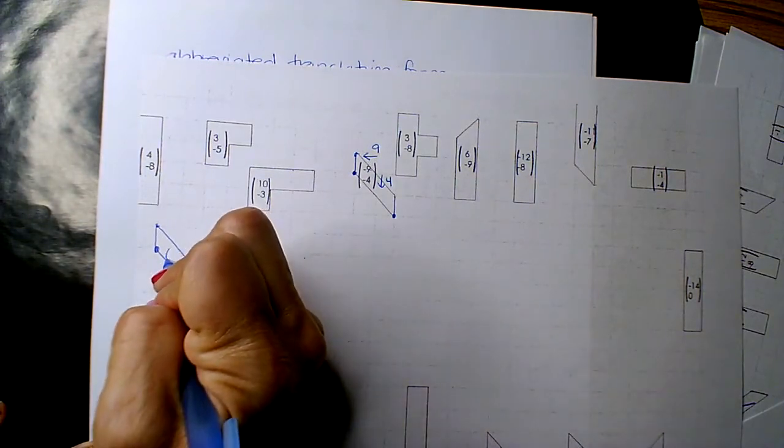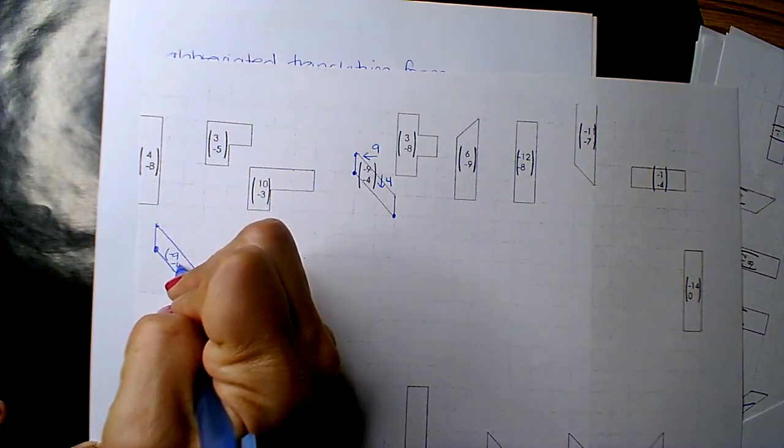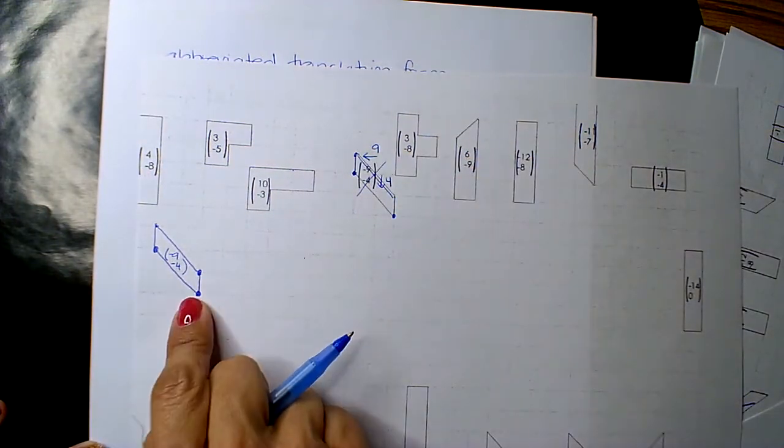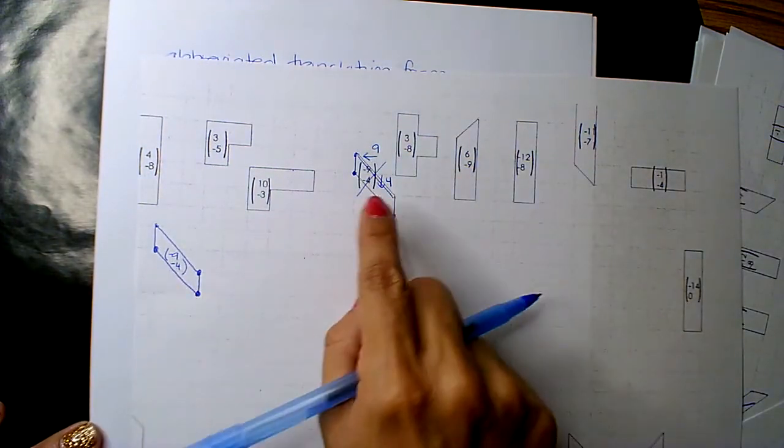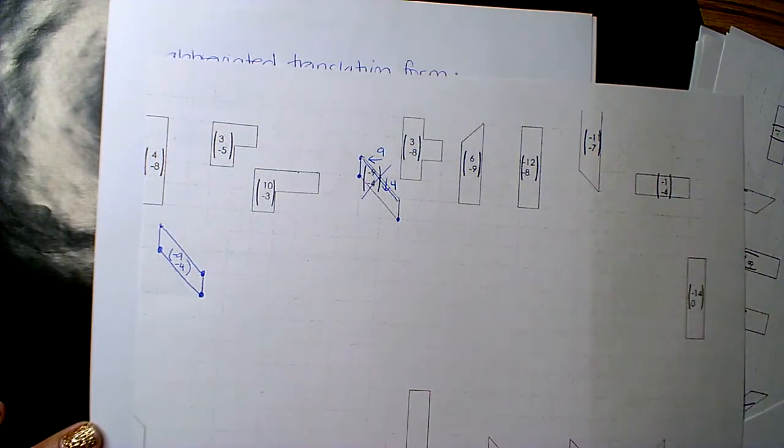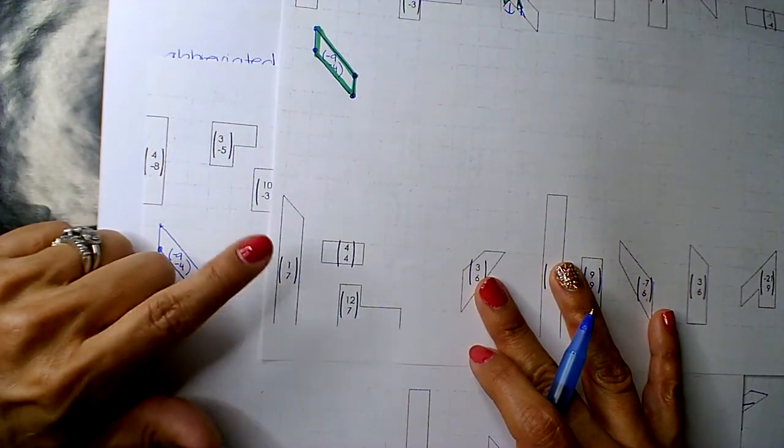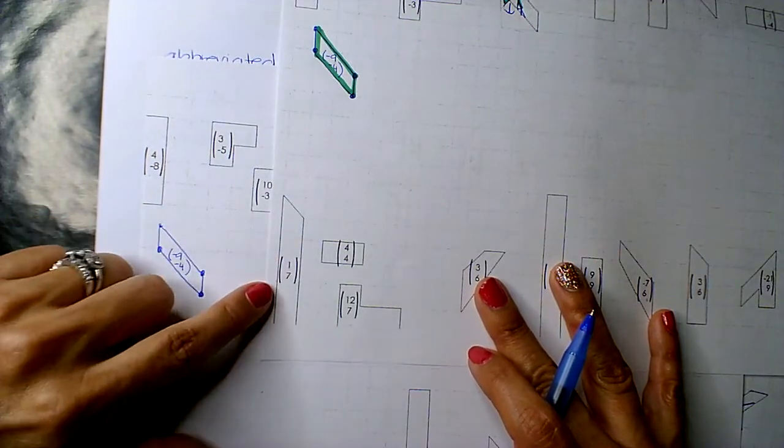And so, some students are marking them as the movement. Some students are crossing them out. Or, some students are using markers. However you want to distinguish, but you have to shift all of these. Here's one with markers. I'm going to have to see which one I uploaded.